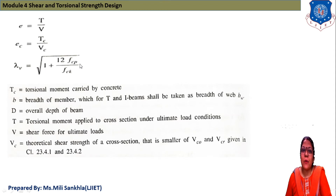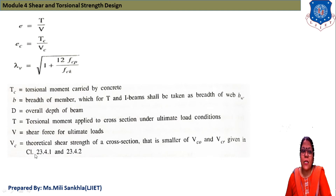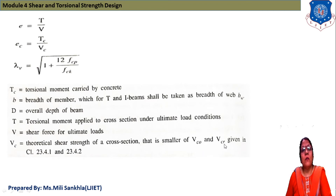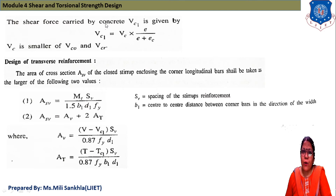The factor λV = √(1 + 12·FCP/FCK). TC is the torsional moment carried by concrete. B is the width of the member; for T and I beams it is taken as the width of the web. D is the overall depth. T is the torsional moment applied to the cross-section under ultimate load. V is the shear force due to ultimate load. VC is the theoretical shear strength of the cross-section, taken as the smaller of VCO and VCI, following Clauses 23.4.1 and 23.4.2 of IS 1343:2012.